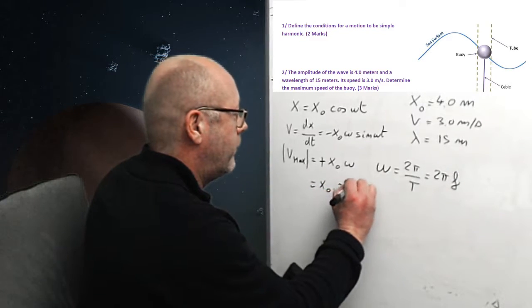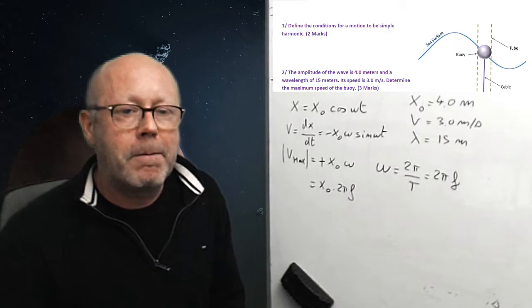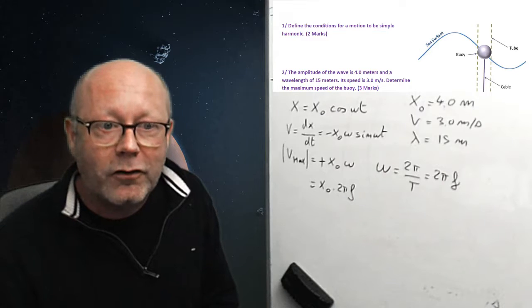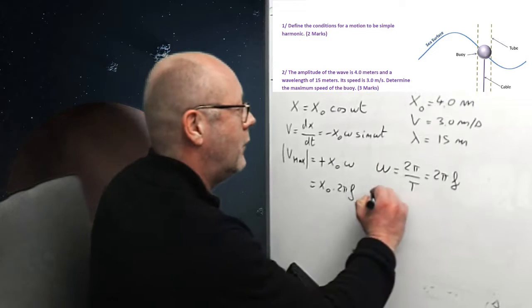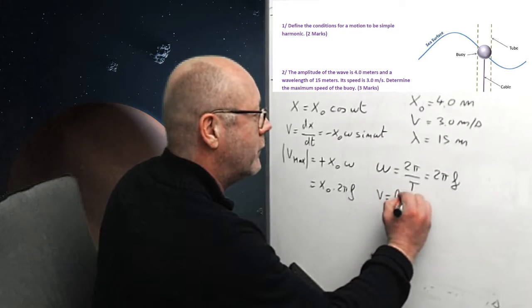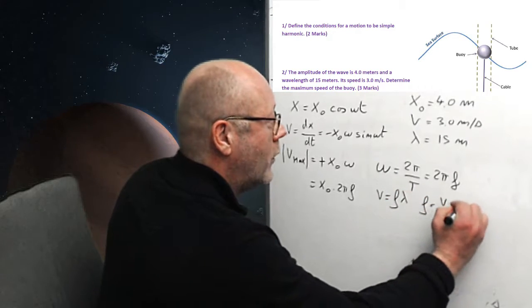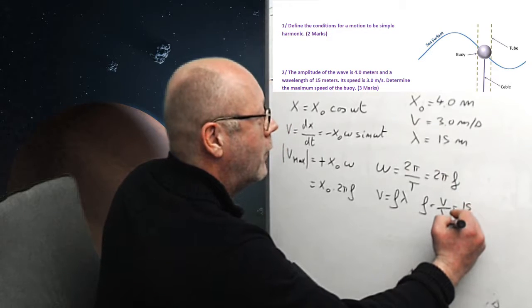It's very useful. Now, I can put this in here. 2 pi f. What is f? Well, we don't have f. But we do have v and lambda. So, with a wave equation, I could find f. v equals f lambda. So, f equals v over lambda.